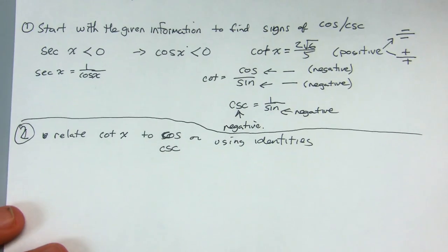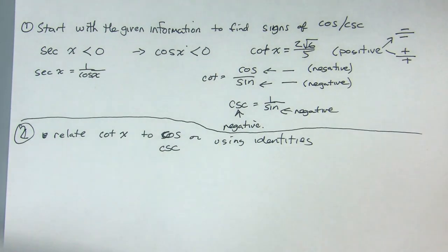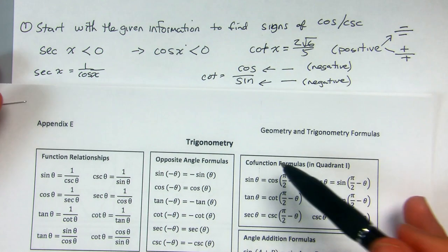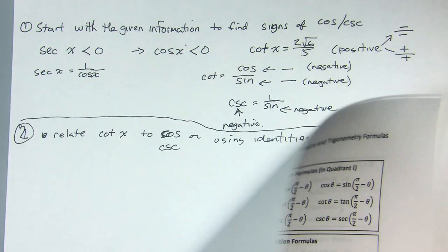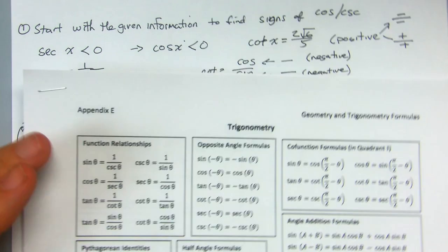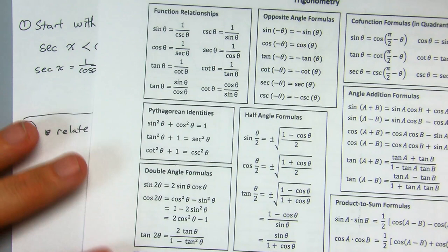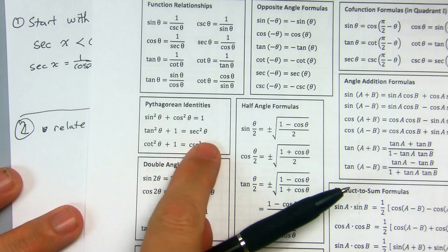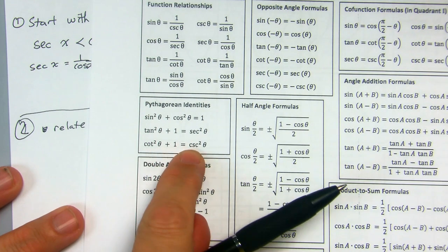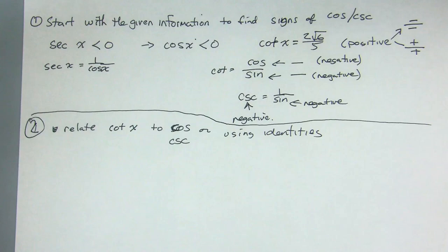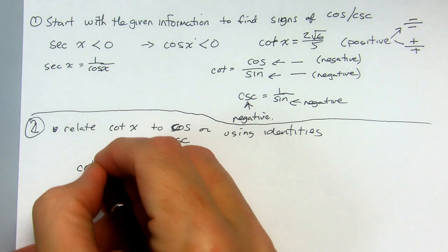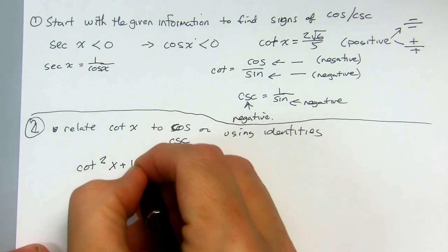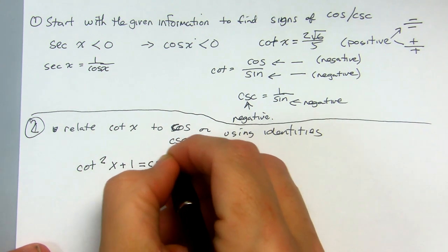We look at our identities. We can look at co-functions, but actually Pythagorean identities are going to be the ones for this one — we're not doing co-functions yet. I see cotangent and cosecant; that's the relation that links to solve this. So that gives us: cotangent squared of x plus 1 equals cosecant squared of x.